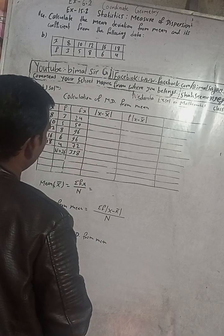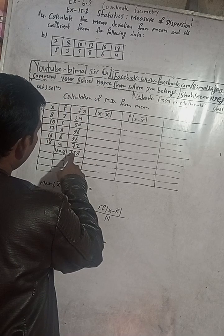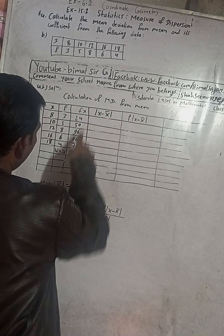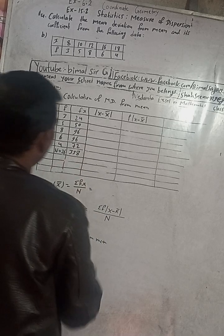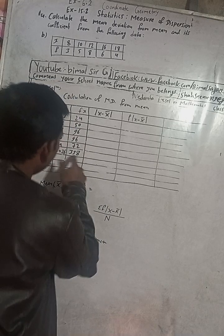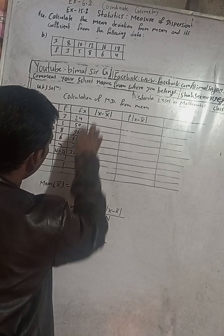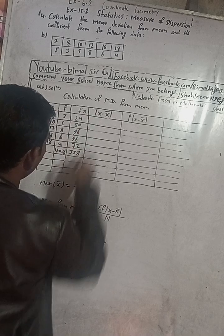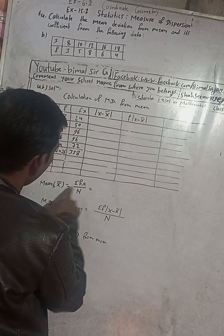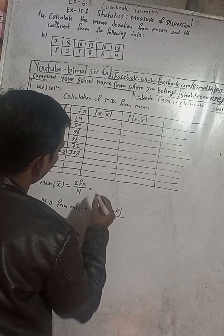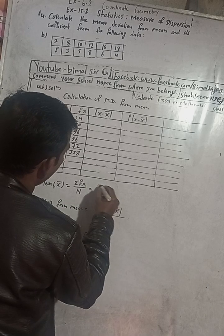After calculation, we get summation of fx = 338. You can write the summation fx here. The mean formula is summation fx divided by N, and summation fx is 338.